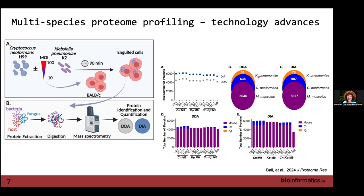We noticed a very good increase in our pathogens using DIA. For the bacterial pathogen, although we only identify 70 proteins — compared to maybe 2,000 on the mass spec when it was just the bacteria itself — it's still a tiny snapshot of what the bacteria is doing, but we've increased it 50%. This different approach gives us more depth of coverage. These plots show total protein counts, and we have similar plots at the peptide level as well.